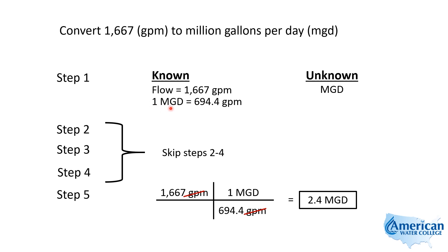But you have to know that 1 MGD is 694.4 gallons per minute. If you need additional help preparing for a state license exam, click the link below and we'll get you some more information about our license-specific exam prep courses.